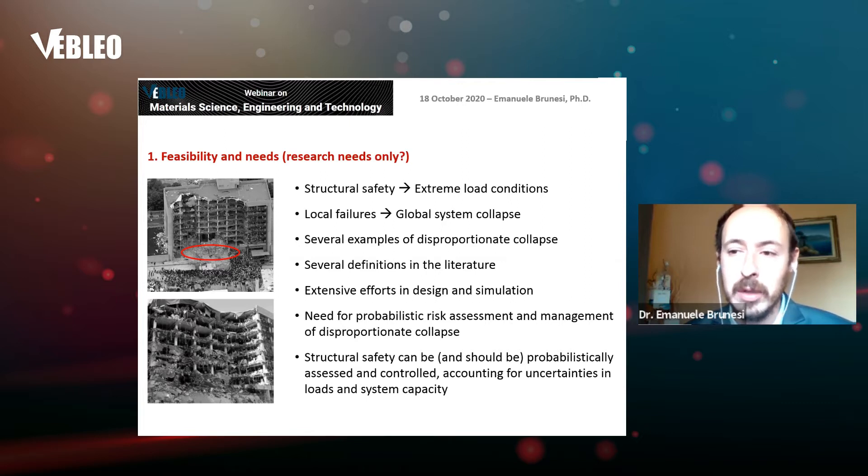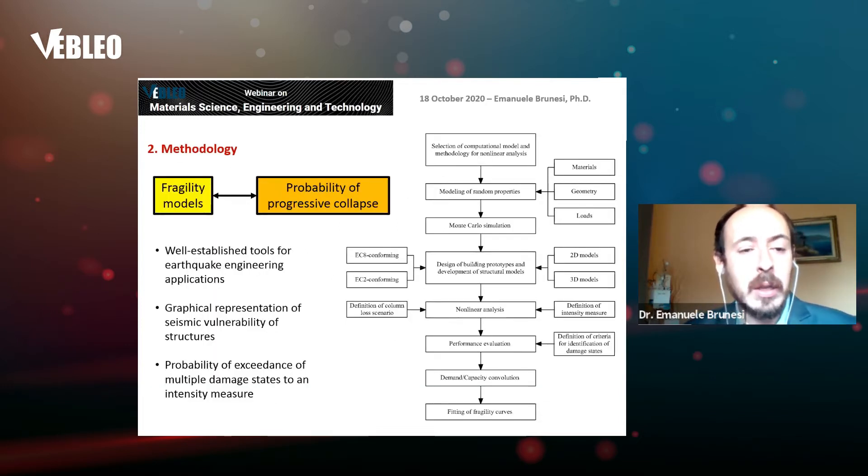However, a very vast majority of studies are currently focusing on parametric or deterministic aspects, while it is believed that structural safety should be probabilistically assessed and controlled, accounting for uncertainties in loads and system capacity. So progressive collapse should be probabilistically assessed by definition. Fragility models are a well-established tool for quick engineering application. They provide a graphical representation of seismic vulnerability and the probability of exceedance of multiple damage states for a given intensity measure.